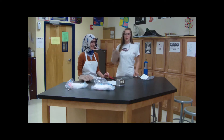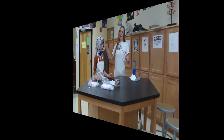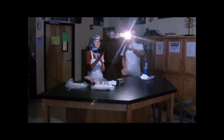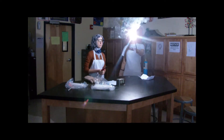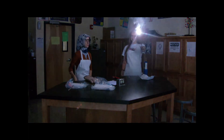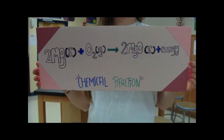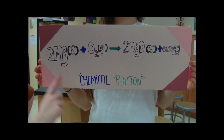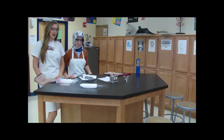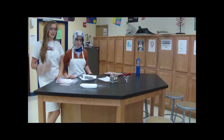Alright, before we start the actual experiment, we want to show you what burning magnesium actually looks like in the air. The chemical reaction you just saw was magnesium with oxygen, which forms magnesium oxide. Now that you've seen what magnesium looks like when it burns in the air, we're going to show you what it looks like when it burns in dry ice.